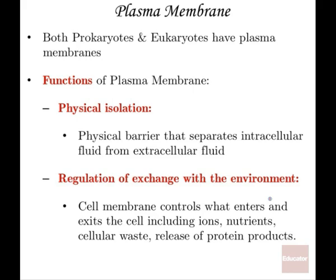The other thing that the membrane does is it regulates the exchange with the environment. So based on how the membrane is arranged, you can have actual control over what enters and exits the cell, including various ions, nutrients, cellular waste, protein products, hormones, secretory products, things that are taken into the cell, nutrition, and various chemicals. All of these things are important to the survival of the cellular organism.